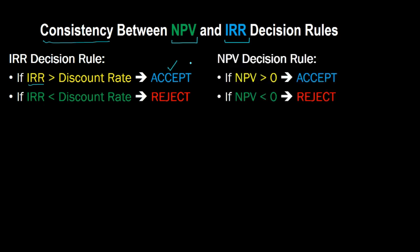At the same time, the NPV rule says that if you find that for a known discount rate — like K equal to 10%, where K is my symbol for discount rate — you discount the cash flows at 10% and find that the NPV is greater than zero, then you should accept the project. So this is what the NPV rule says and this is what the IRR rule says.